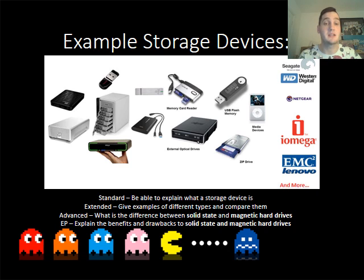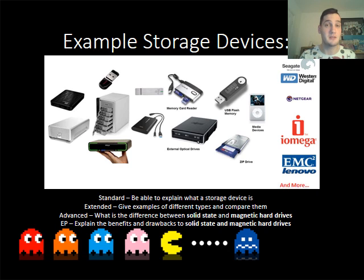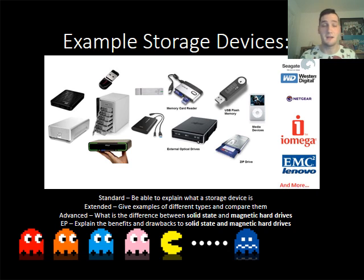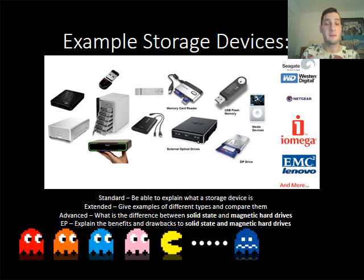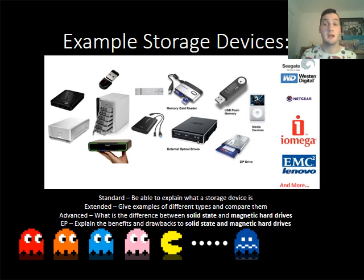You are going to need to do a research task and acknowledge the different types of drive available. For those wanting to reach extended, advanced, or EP, you will need to know the difference between solid state and magnetic hard drives, and the benefits and drawbacks of each. Hard drives used to be quite thick and chunky — magnetic drives had a disc and a platter on top that would spin, and they had moving parts. Solid state drives, such as USB flash memory, don't have moving parts. You will need to research further for your work.